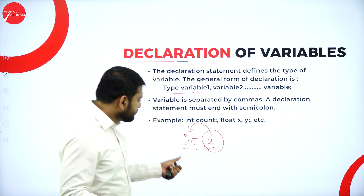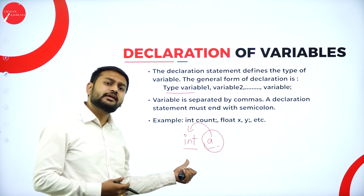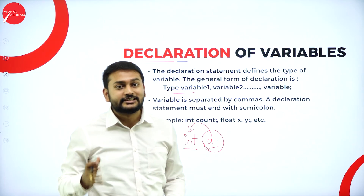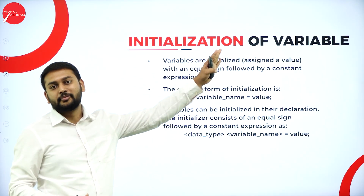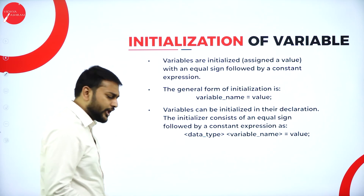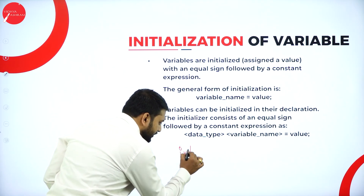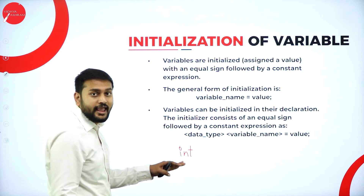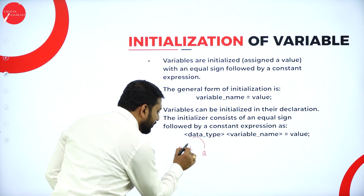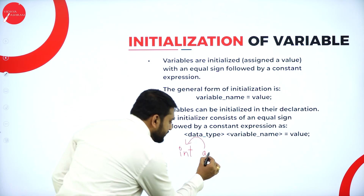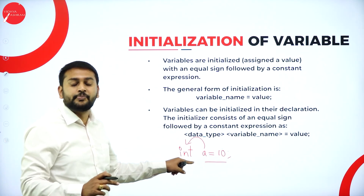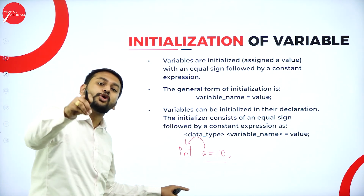Now, I understood how to declare a variable. Why am I declaring it? Obviously, you need to store the value inside the variable — that process is called initialization of the variable. What is the syntax? You can do it in two types. First type: write the data type, then the variable name 'a', then equals 10. So 'int a = 10' — this is what I call initialization, meaning you are assigning the value to the variable.